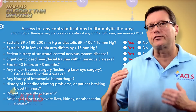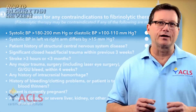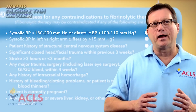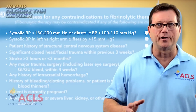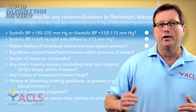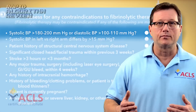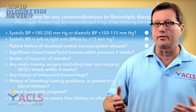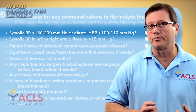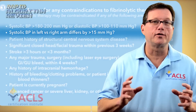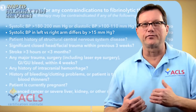First, assess their blood pressure. The literature says a systolic between 180 and 200, and a diastolic of 100 to 110 — I just remember 200 over 110 as the upper limits for both. So if the patient is currently hypertensive, we need to treat that, and we can. We can give them a medication and bring their pressure down. Next, we want to assess for a blood pressure change greater than 15 millimeters of mercury between the right arm and the left arm.